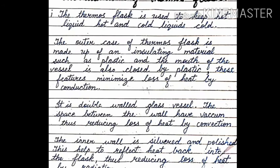Insulating materials do not pass heat through them, so these features minimize loss of heat by conduction. The thermos flask is a double-walled glass vessel and the space between the walls has vacuum. Vacuum means a place without air or a place without medium. This reduces loss of heat by convection.